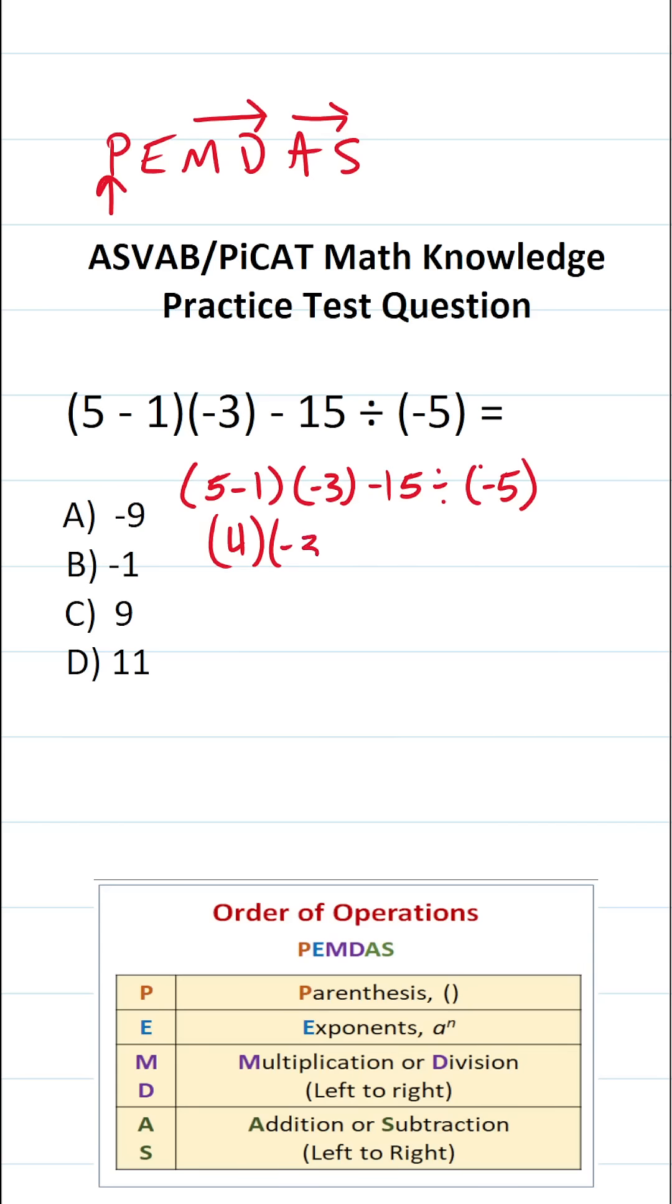So this becomes 4 times negative 3 minus 15 divided by negative 5. And now as we look at this expression, you can see that we have three operations left. We have multiplication, notably 4 times negative 3.